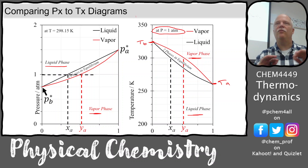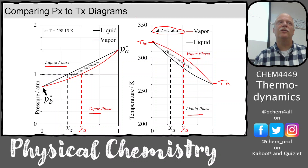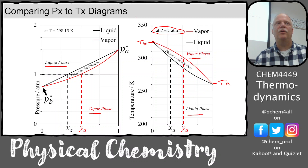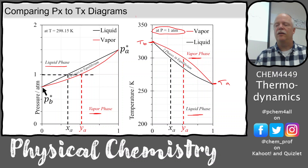Now we don't have Raoult's law or Henry's law or anything for the temperatures. Those are vapor pressure partial pressure diagrams. For the boiling points, we have these two phases in equilibrium, and we look at the different compositions between liquid and vapor. So this TX phase diagram is used a lot in separations and distillation.